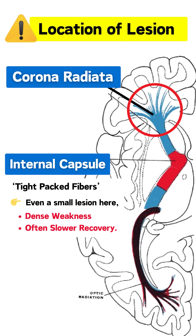The internal capsule is like a tight cable bundle, with all motor fibers packed in a small space. Even a small lesion here leads to dense weakness and often slower recovery.